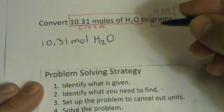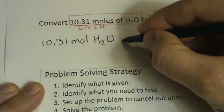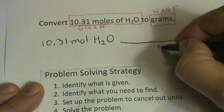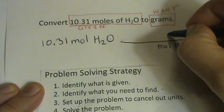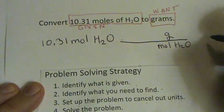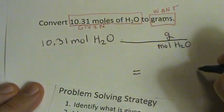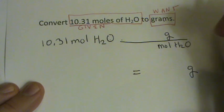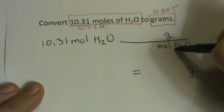And I need to multiply it by something that's going to cancel out the moles. So I know that I'm going to need moles of H2O on the bottom and grams on the top. And what's nice about that is then I can end up with the grams I'm looking for here in my final answer.